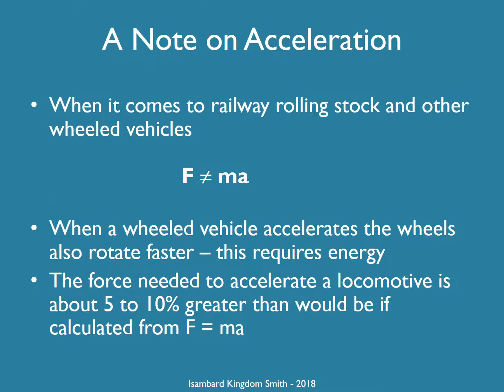If asked what's the formula to calculate the force needed to accelerate a mass, you might say F equals ma. But for a wheeled vehicle that's not quite true, because the wheels have to be accelerated — they have to rotate faster — and that also requires energy. The force needed to accelerate a wheeled vehicle like a locomotive or a coach is about 5 to 10% greater than it would be if you just used F equals ma.